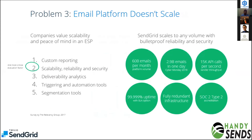For Problem 3 — platform scalability — this is very important because all SMEs and startup companies experience growing customer volumes. SendGrid scales to any volume with bulletproof reliability and security. We send 60 billion emails every month, and on Cyber Monday we send 2.9 billion emails in one day. Every second we handle 15,000 API calls, with 99% uptime and very good security.